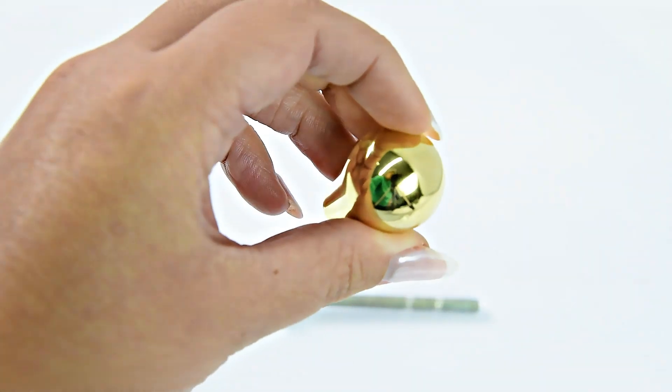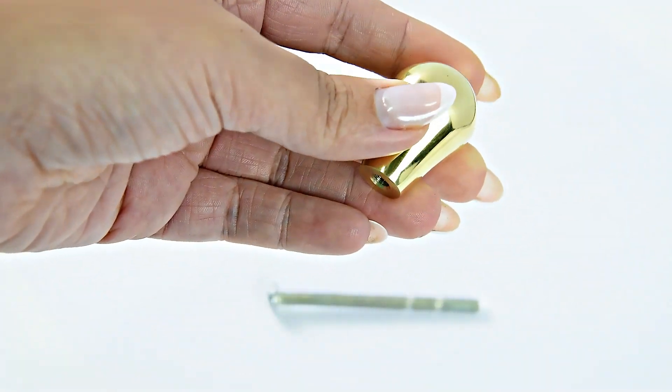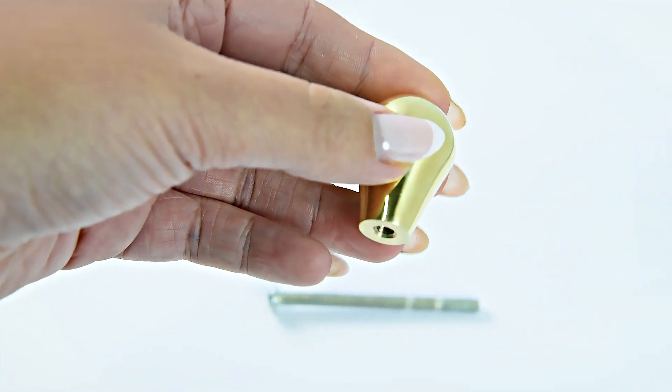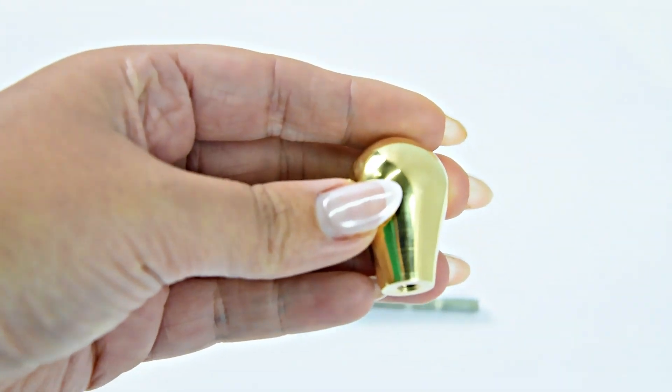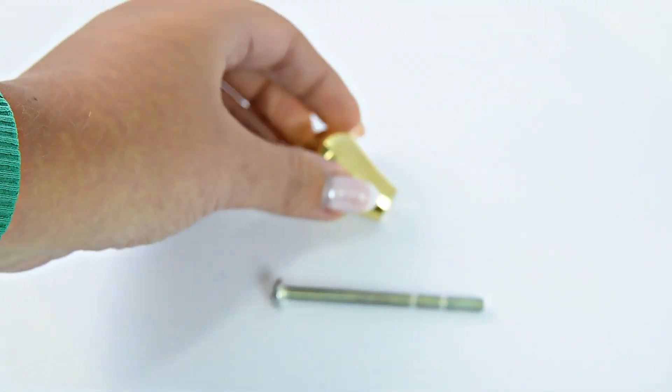So this is the Teardrop Cupboard Knob and the code for this is F3966. Thanks.